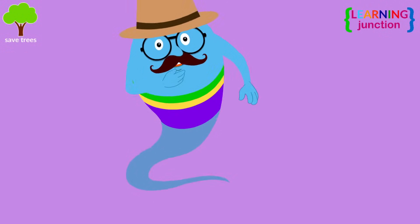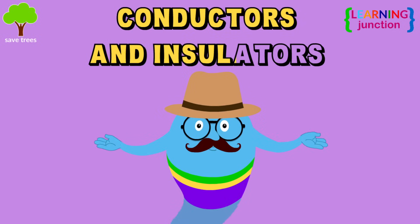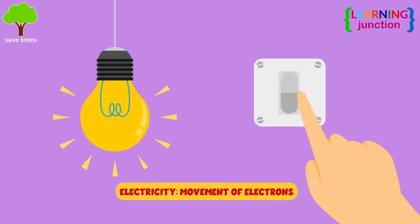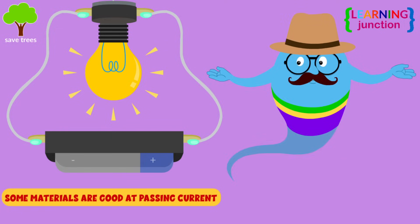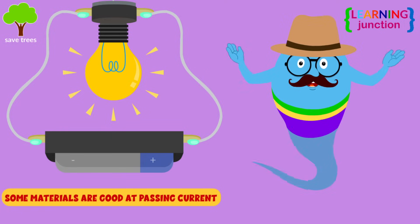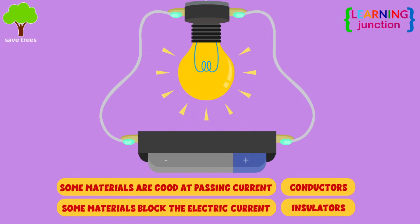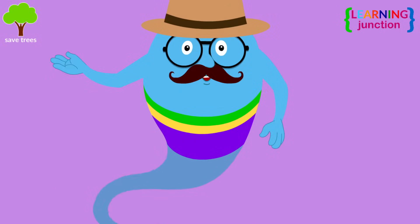Hello friends, today we'll learn about conductors and insulators. Electricity is the movement of electrons, called electric current in a circuit. Some materials are good at passing an electric current through them, and some others block the current. These materials are known as conductors and insulators. Let's learn about the conductors first.